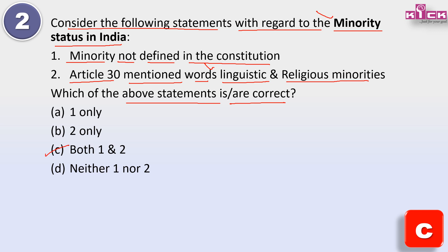Answer is C - both are correct. Minority is not defined in the Constitution. And Article 30 has two words - Article 30 says 'All Minorities' and after that it is written 'whether on the basis of language or religion.' So these two words are visible here.